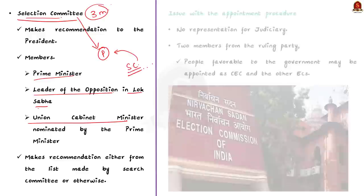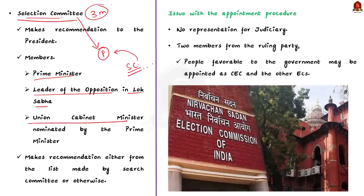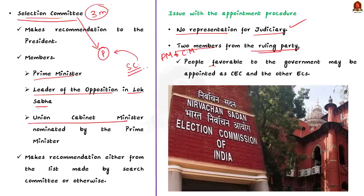The main criticism is the composition of the selection committee, as it does not have any representation from the judiciary. Also, since two members of the selection committee — the Prime Minister and a Union Cabinet Minister — will most often be from the same political party, there is a concern about political bias. The opposition wants the government to revert to the Supreme Court judgment and include a judicial member in the selection committee.